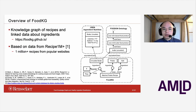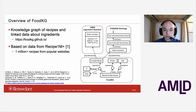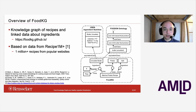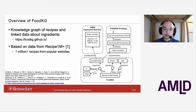I'll give a brief overview of the FoodKG, since it was very important for our methods — both for identifying substitutions and considering the health aspects of substitutions. The FoodKG is a knowledge graph of recipes and linked data about ingredients developed by the HEALS project. It is based on data from the Recipe1M+ project, which contains a dataset of over a million recipes from various popular websites. On the right side, we can see a small depiction of the kind of information included in the FoodKG.